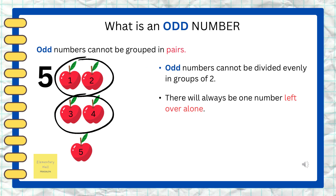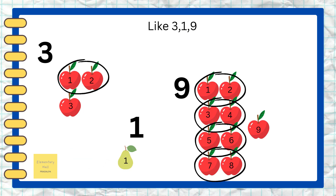Now, what is an odd number? Odd numbers cannot be grouped in pairs. They cannot be divided evenly in groups of two, and there will always be one number left over alone. Can you see here — number five? There are five apples and one apple is left alone.